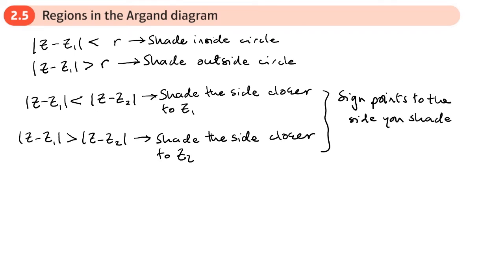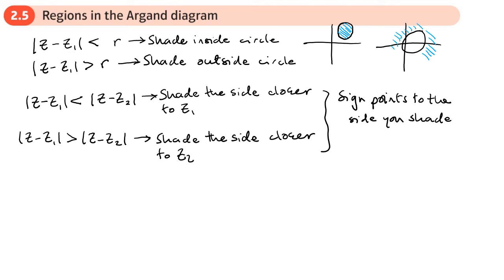Let's look at what these things look like. For the first one, it may be that you shade inside here, or it may be that you shade outside. That's an example of each one — this is an example of the inside type, that is an example of the outside type.